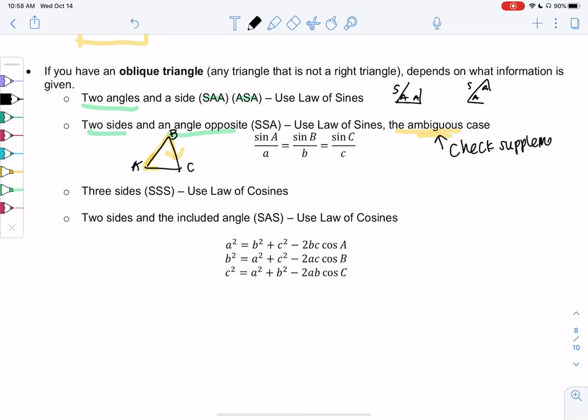But we'll use law of sines and make sure we check the supplement in that ambiguous case. So if we don't identify which type we're in, we might forget to do this. And we don't have to do it every time. When we have all three sides (SSS), law of sines does not work. You can try it, but you need at least one angle to do law of sines. So we'll use law of cosines.